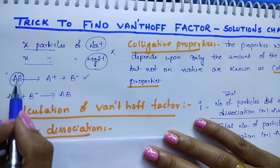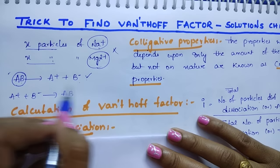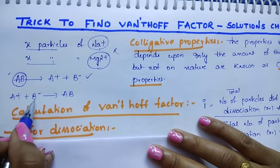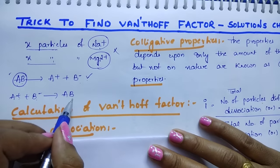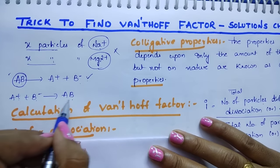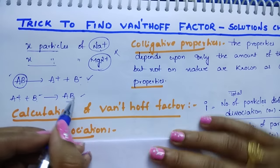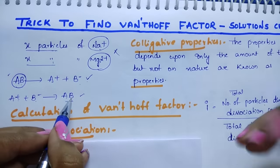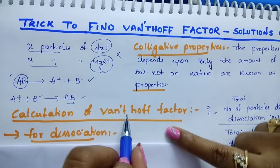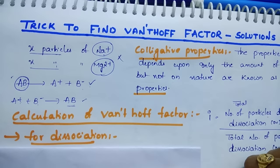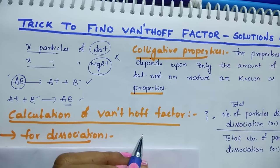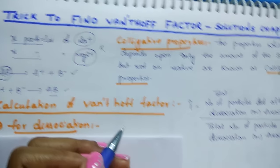It is irrespective of whatever the ion is — it depends only upon the ions. And here, A⁺ combining with B⁻ forms AB, meaning it is associating. After association, the number of particles decreases, so colligative properties also change. At that time, Van't Hoff introduced a factor called I which is useful to calculate colligative properties.